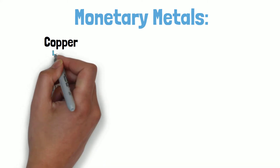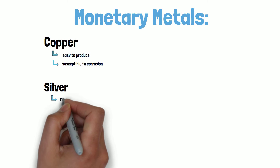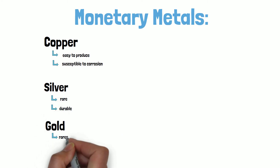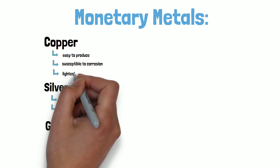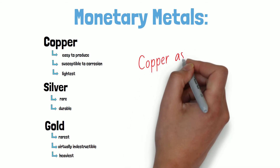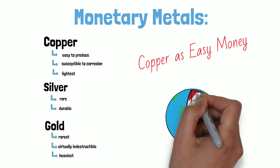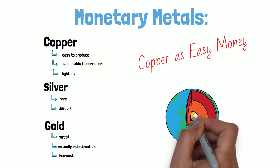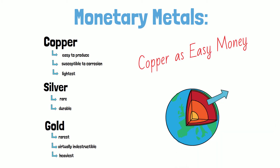Let's look at each of the monetary metals. Copper is easy to produce and susceptible to corrosion. Silver is rare and durable. Gold is the rarest and virtually indestructible. Gold was mainly used for large transactions because it's the heaviest; copper for the least valuable transactions because it's the lightest. But monetary metals can be easy money too. History has shown that copper has a low stock-to-flow ratio — the amount of copper in the earth is more than we can measure, let alone extract through mining.